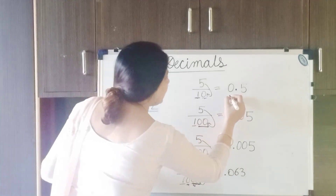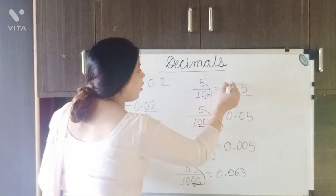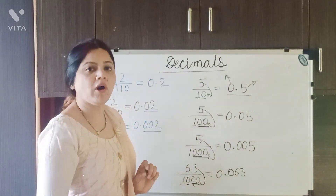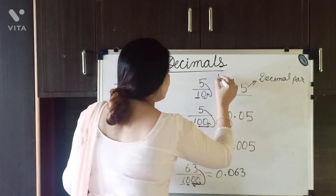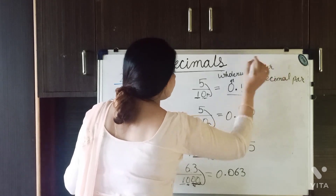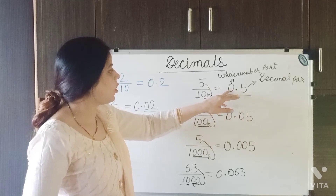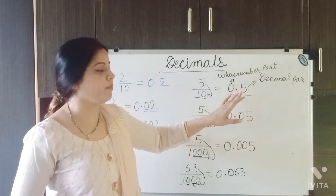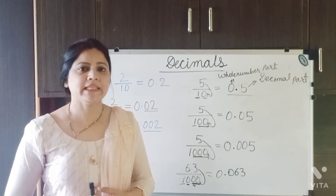One more thing: any decimal fraction has 2 parts. The number before the decimal point is called the whole number part or integral part. The number that comes after the decimal point is called the decimal part. I hope this video will help you. Stay connected. Goodbye.